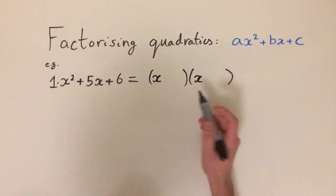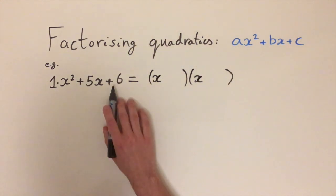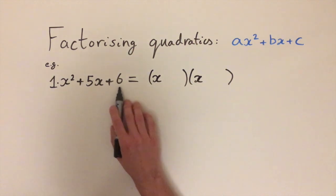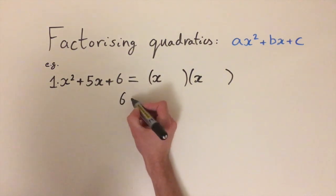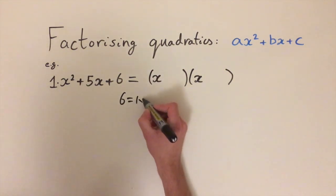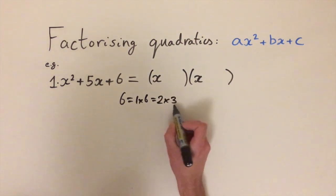So we're halfway there and we just need to figure out what numbers go here. We need two numbers that multiply together to get 6 and add together to get 5. We can write 6 as 1 times 6 or 2 times 3 or 3 times 2 or 1 times 6, but that's just rearranging.